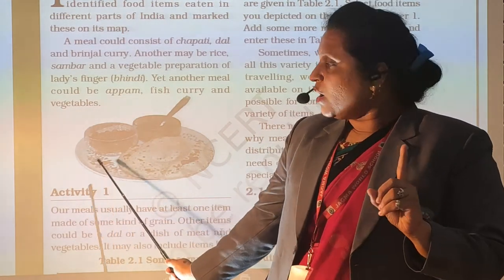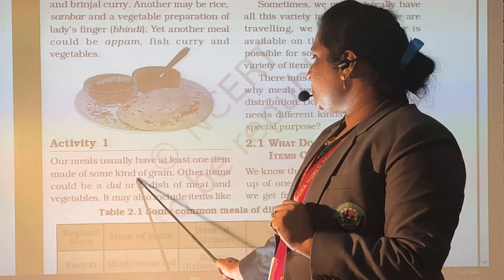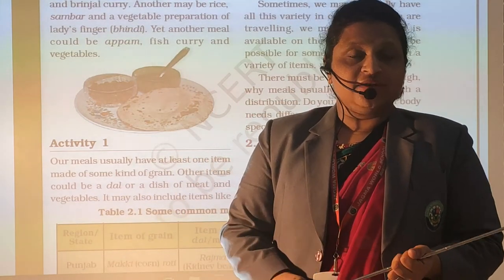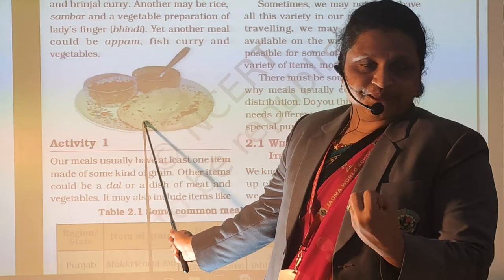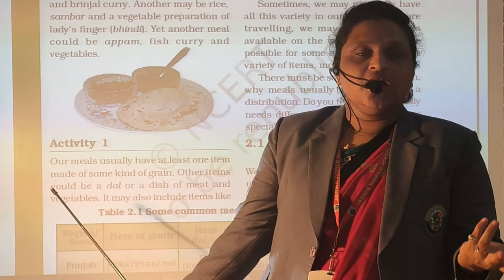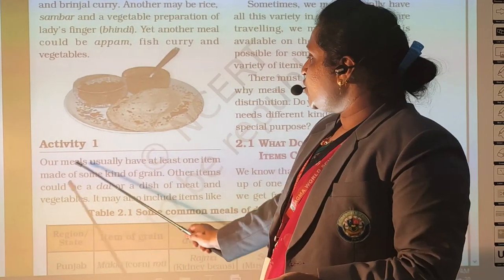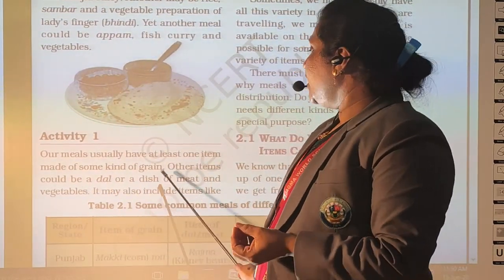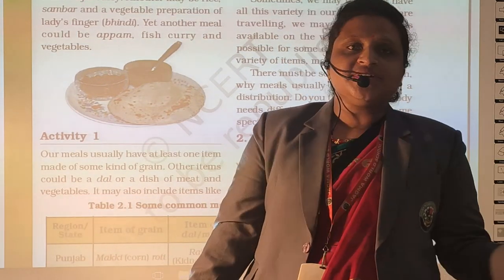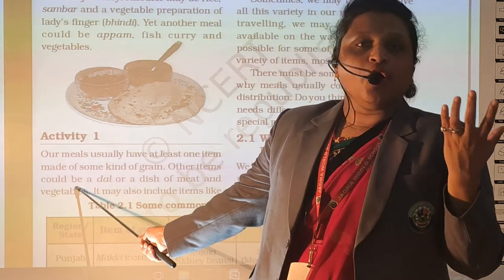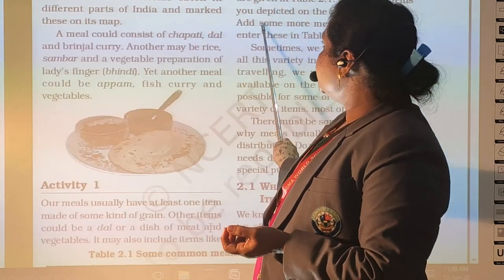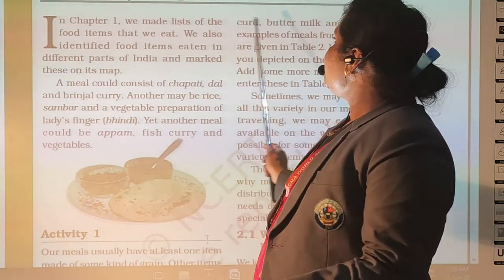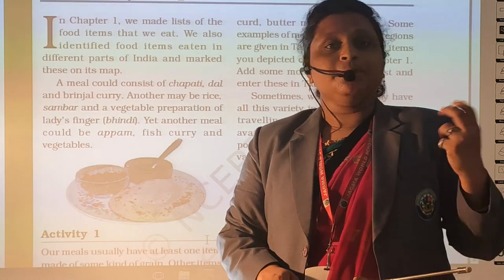Our meals usually have at least one item made of some kind of grain. Chapati is made from wheat grain; rice is made from raw rice grain. Other items could be dal, or dishes made of meat and vegetables — meat from animals, vegetables from plants. A meal may also include curd, buttermilk — both from cow or buffalo milk — and pickles, which are made from mango and other plants.